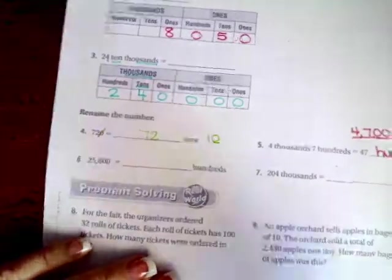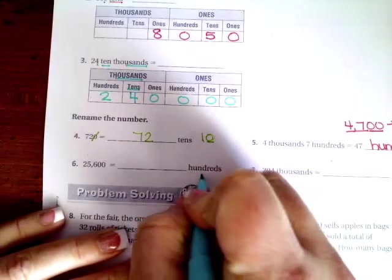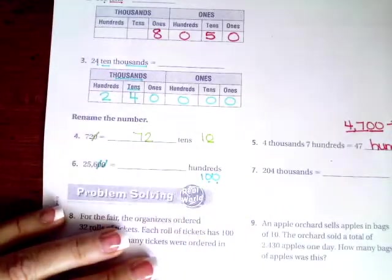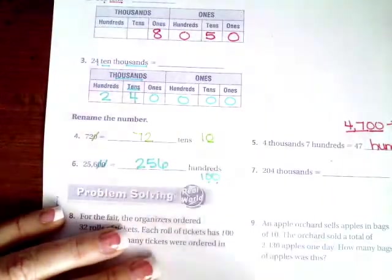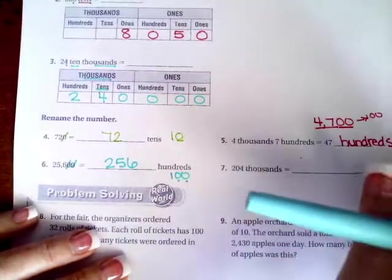I'm gonna do one more. How many hundreds is this? Well, how many zeros are in a hundred? Two zeros. I'm gonna take off those two zeros, two hundred and fifty six. I want you guys to try to do number seven on your own. You totally can, I believe in you.